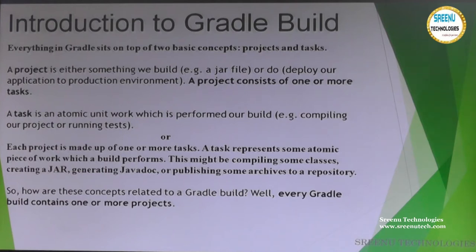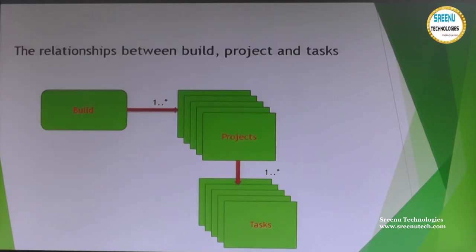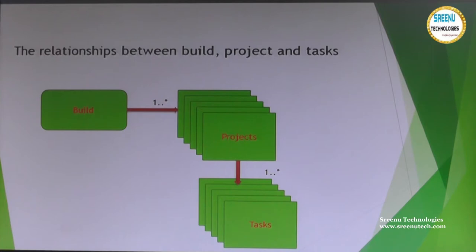Every Gradle application must have these two things: one is a project and another is a task. Every Gradle build contains one or more projects. These projects in turn contain one or more tasks. In Java multi-project applications, each unit is called a sub-project, and each sub-project has its own tasks.